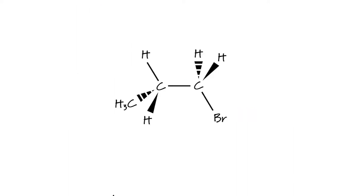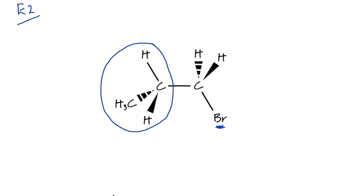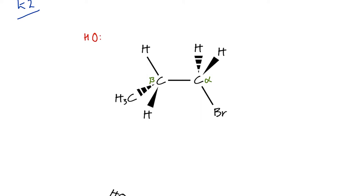Starting with the E2 mechanism: here I have a primary haloalkane, where the halogen is bonded to a carbon bonded to only one alkyl group. The carbon bonded to the halogen is called the alpha carbon, and the next carbon along the chain is the beta carbon. The base — hydroxide ion in this example — attacks a hydrogen on the beta carbon. Electrons from that C–H bond move to between the two carbons, and the C–Br bond breaks, with electrons moving onto the bromine.